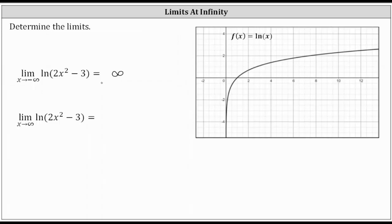Now remember, when we say a limit is equal to positive or negative infinity, that really indicates the limit doesn't exist because it's not approaching a specific real number, and plus or minus infinity is not a real number. As for the second limit, as x approaches positive infinity, the input into the natural log function is still two times the square of the x value approaching positive infinity minus three, which again will also increase without bound. Since the inputs increase without bound, so do the outputs of the natural log function, and therefore this limit is also equal to positive infinity.